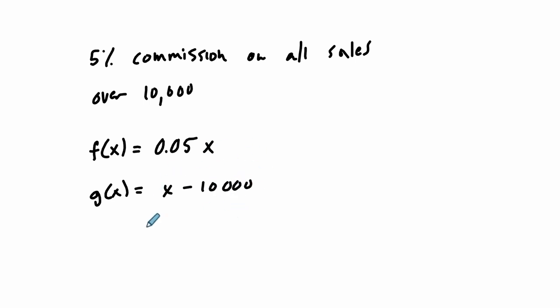Now, there are different compositions of functions, and we can say, okay, well, what is f of g of x? Does that tell me how much I'm going to make? What does that do? Versus g of f of x, g composed of f. Let's look at what those mean.